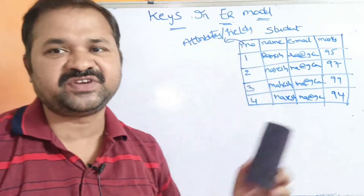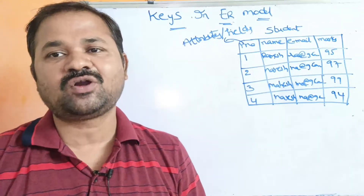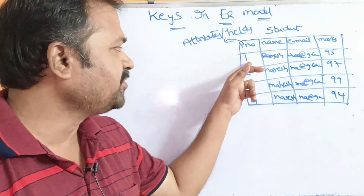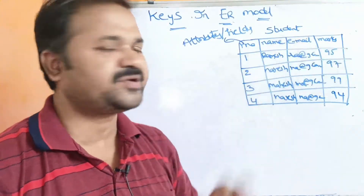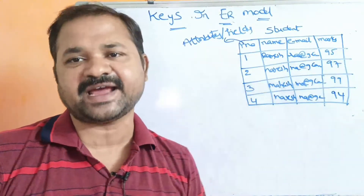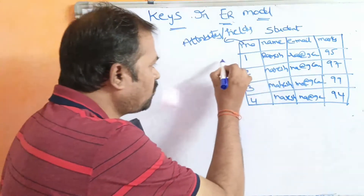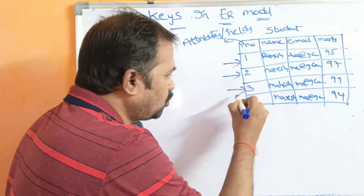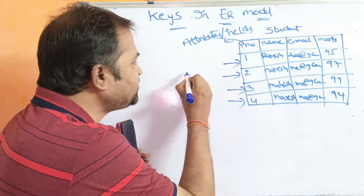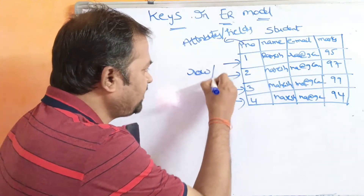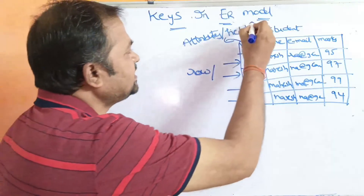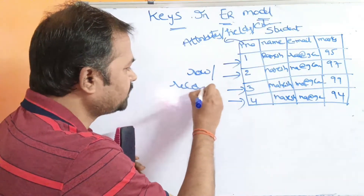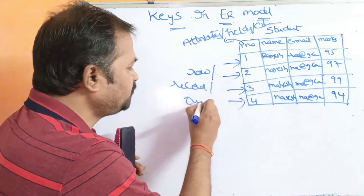The values which we enter in the table are called as attributes or fields. So roll number is an attribute, one is an attribute, Ramesh is an attribute, 95 is an attribute — everything is an attribute. Each row of the table is called a row, and each row is nothing but a record or we can call it a tuple.